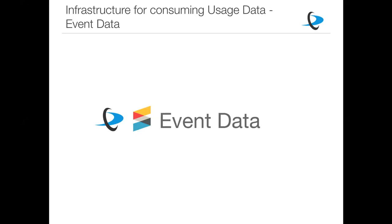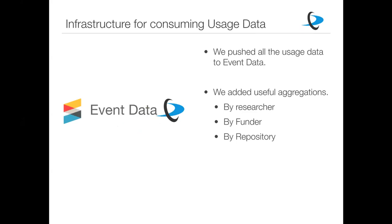In the Make Data Count project, we are using Event Data as the main place to allow repositories and anyone to consume usage data. Having this in a centralized way helps eliminate silos, improve information flow, and reduce complexity, because it provides a single place to retrieve usage and citations and eliminates a lot of work for repositories. Every time you share usage reports with DataCite, we push that usage into the Event Data service and make it available for everyone to access.